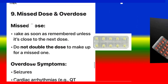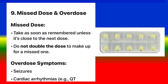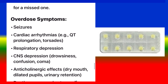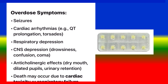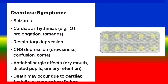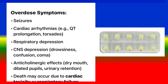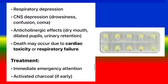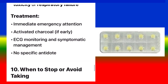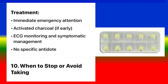Missed Dose and Overdose: For a missed dose, take as soon as remembered unless it's close to the next dose — do not double the dose. Overdose symptoms include seizures, cardiac arrhythmias (e.g., QT prolongation, torsades de pointes), respiratory depression, CNS depression (drowsiness, confusion, coma), and anticholinergic effects (dry mouth, dilated pupils, urinary retention). Death may occur due to cardiac toxicity or respiratory failure. Treatment: immediate emergency attention, activated charcoal if early, ECG monitoring, and symptomatic management. No specific antidote.